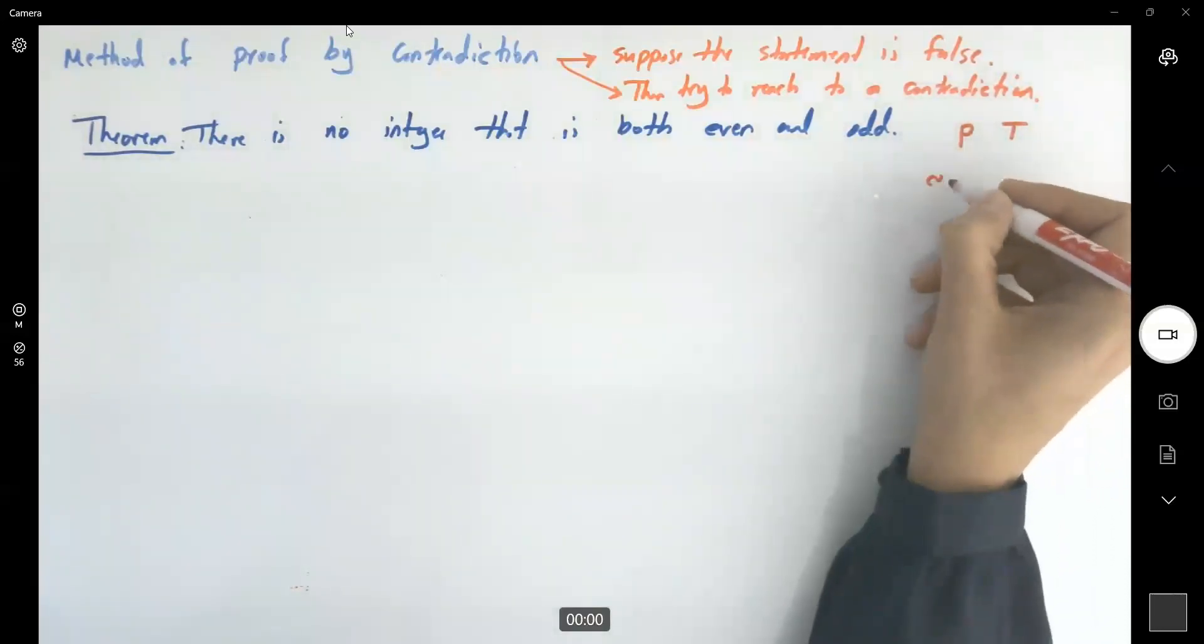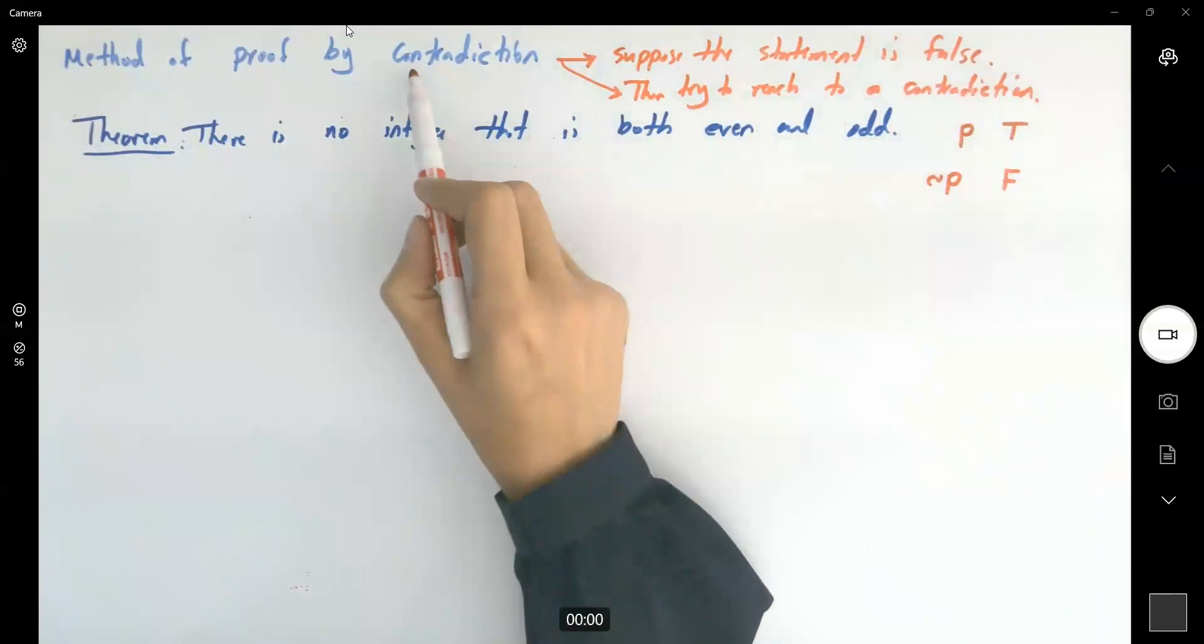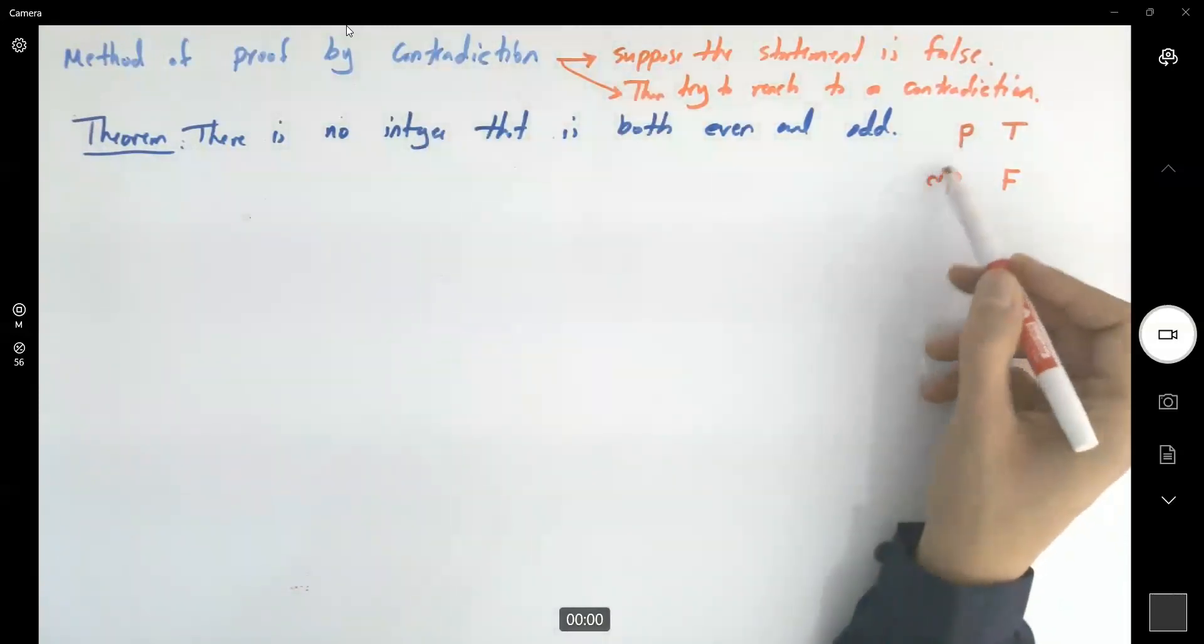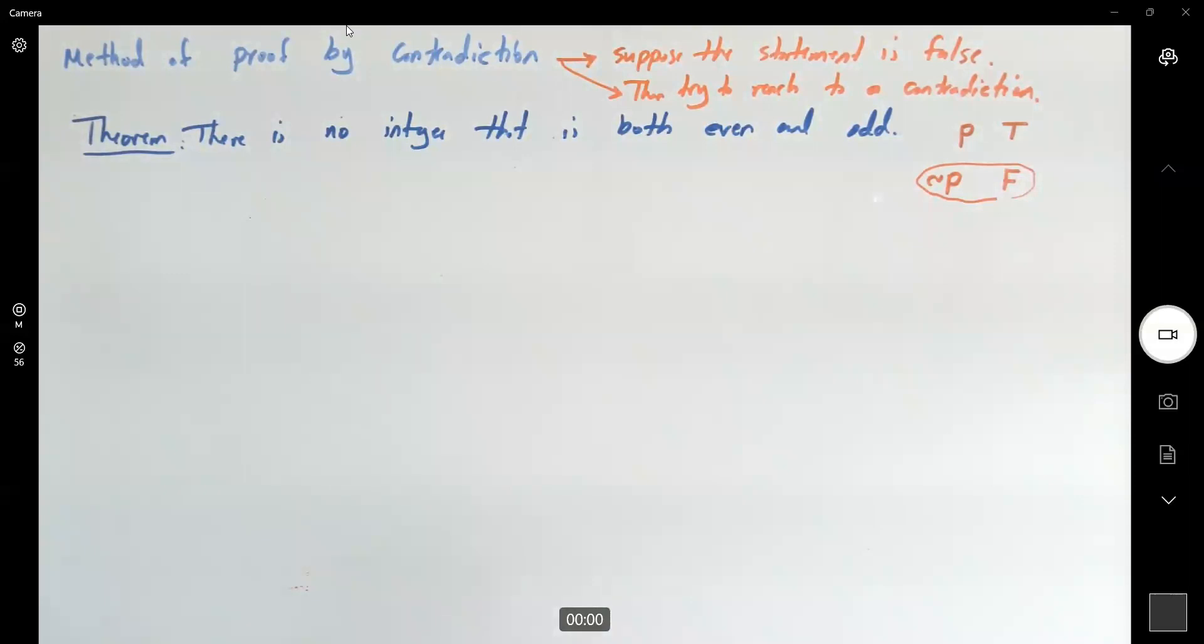So if I show that not P is false, then I'm done. That's the method of contradiction. If I show that the negation is false, it automatically proves that the original statement is true. So let us apply the method of contradiction.